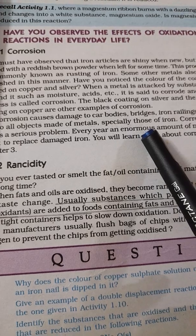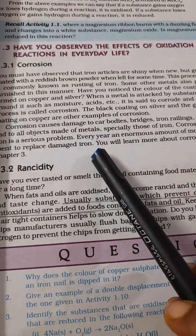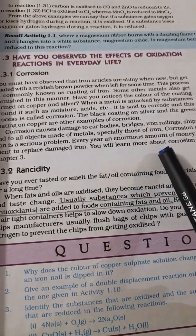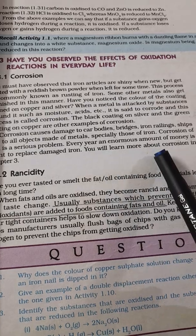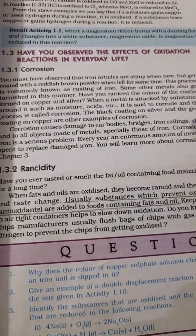It causes damage to car bodies, bridges, iron railings, ships and all objects made of metals, especially made of iron. Corrosion is a serious problem and every year enormous amounts of money are spent to replace damaged iron.